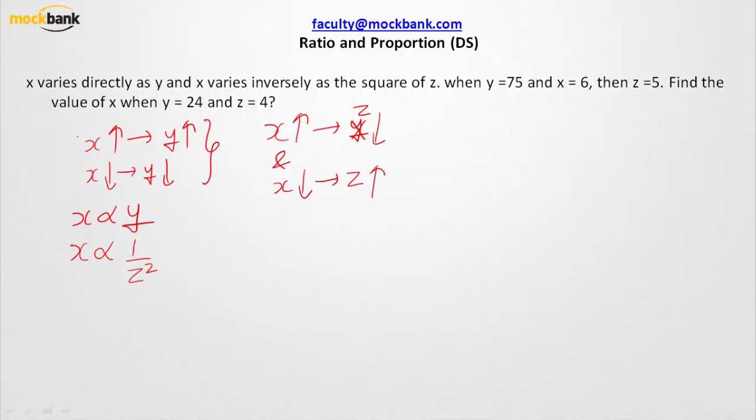I should be writing here as x is inversely proportional to the square of z. That is how we are getting equations 1 and 2. From 1 and 2, should I be saying that x is proportional to y over z square?